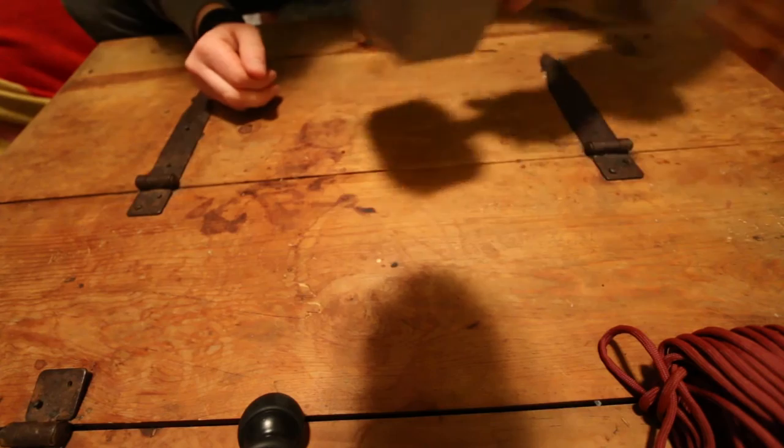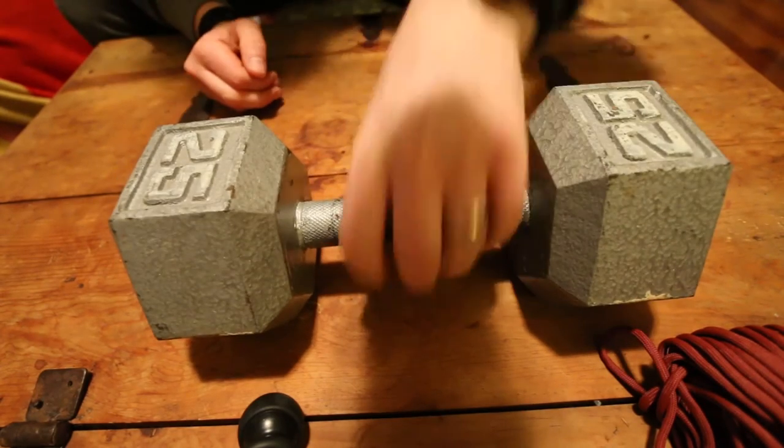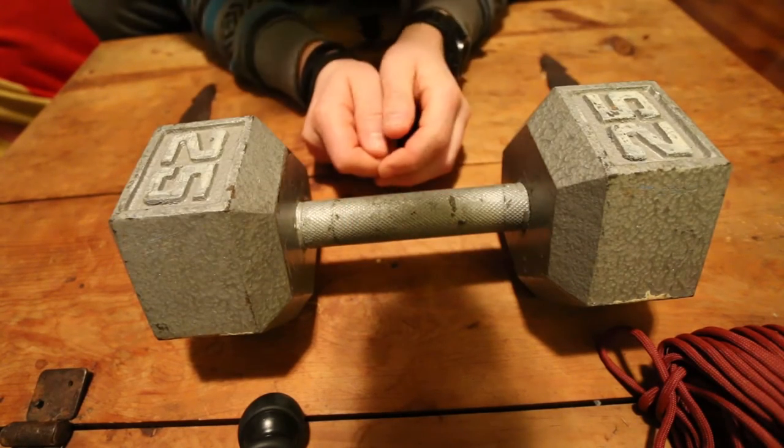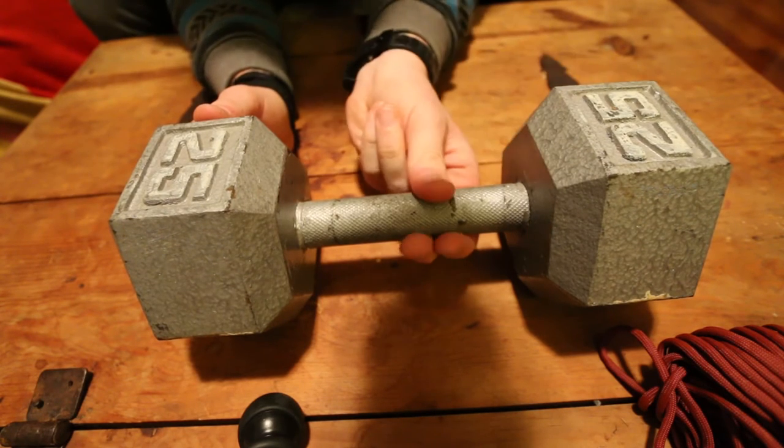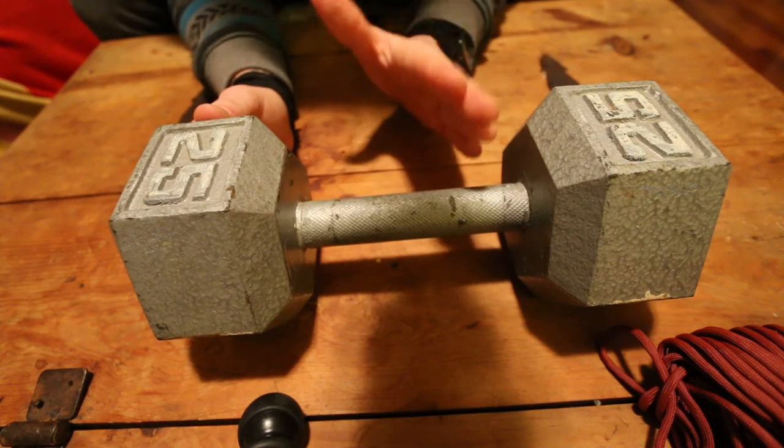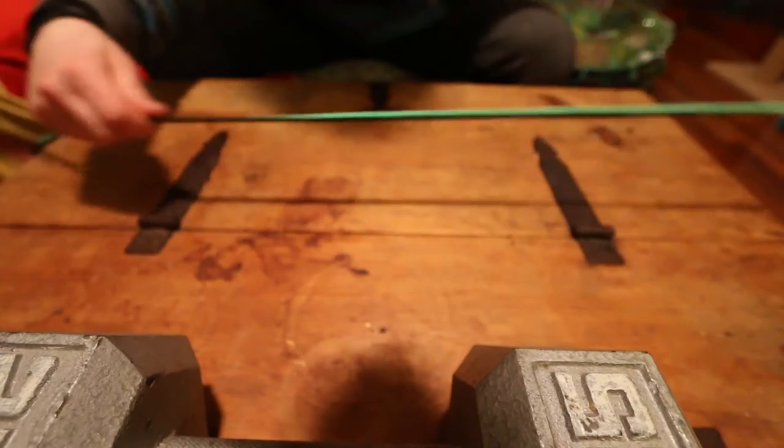We're also going to need something heavy to wrap the cord around as we braid it. So I got this 25 pound weight. It's perfect. It's circular. You can do something as simple as use your ankle.